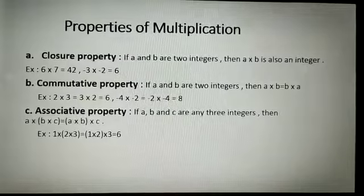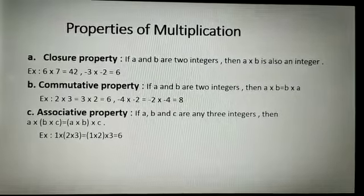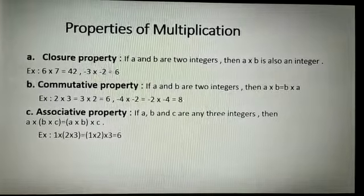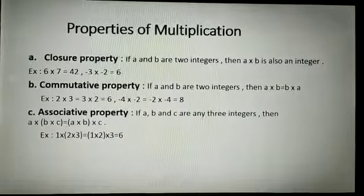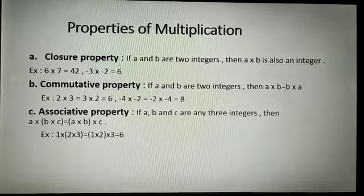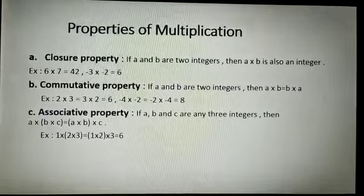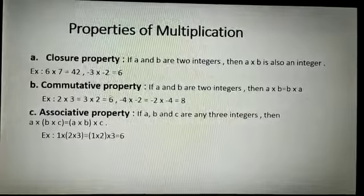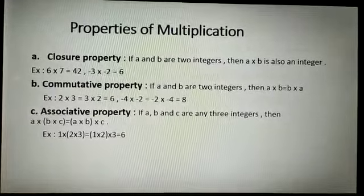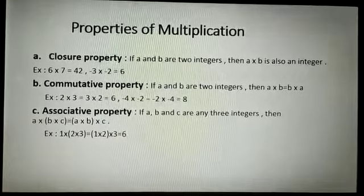Commutative property holds in multiplication, so their multiplication should be equal. For example, if we take 2 and 3, then 2 multiplied by 3 gives 6. If we multiply 2 with 3 or 3 with 2, you will get the same answer. That means it is commutative under multiplication.